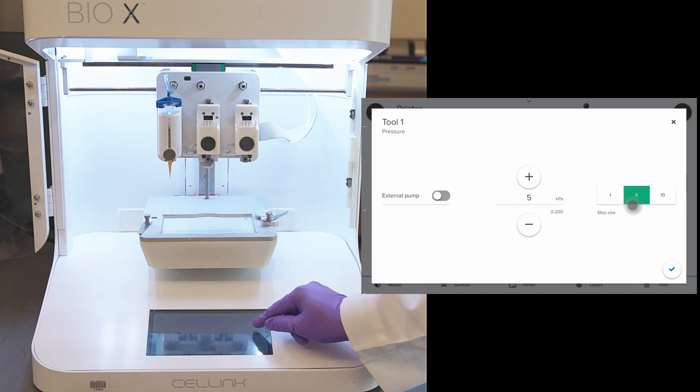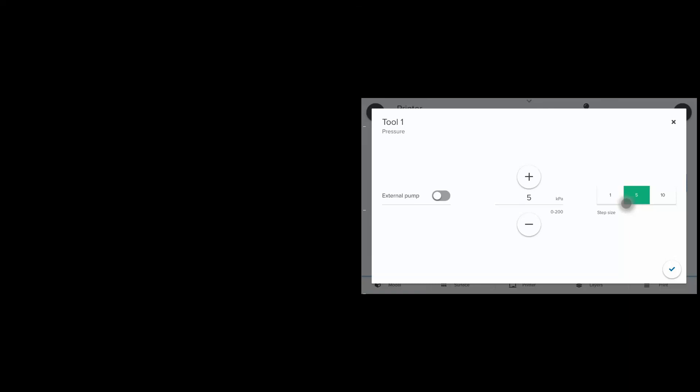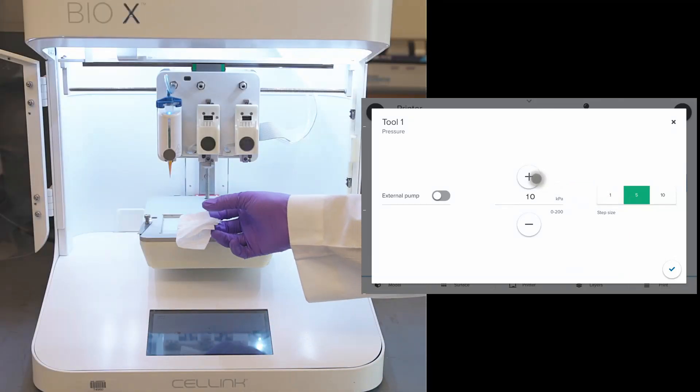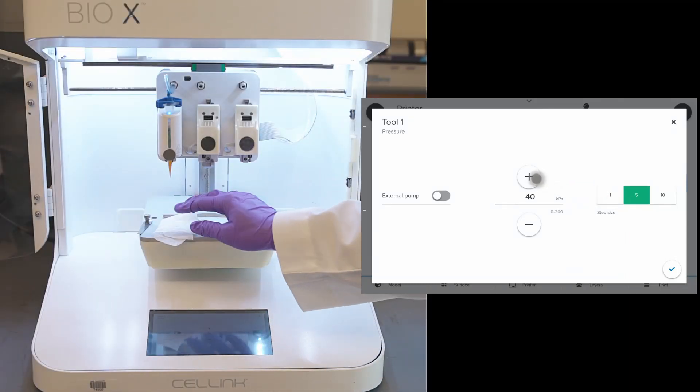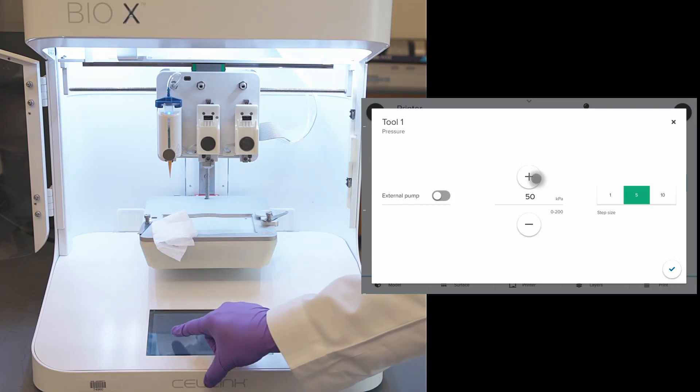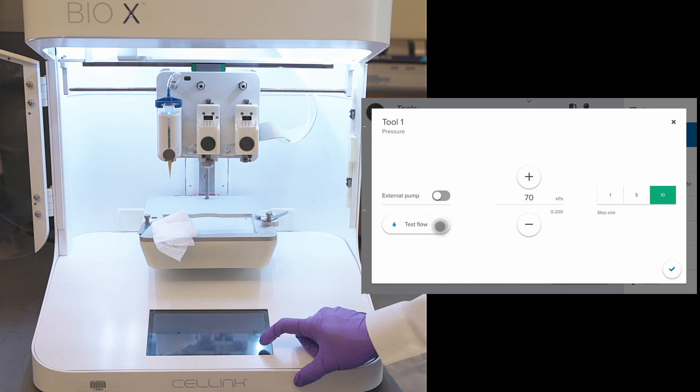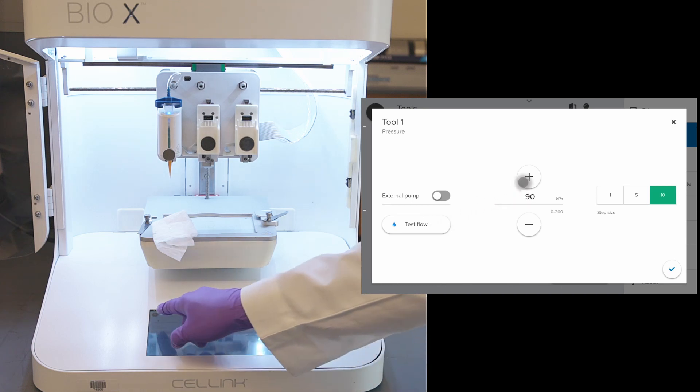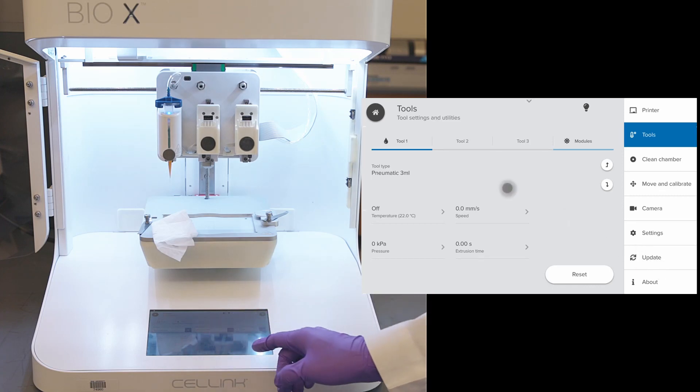Here, we can choose different step sizes. Place a piece of Kimwipe to collect extruded material. Adjust the pressure and click test flow. We may have to try different pressures until we see uniform fiber being extruded. As 50 kPa is not extruding a uniform fiber, I am going to increase the pressure to 100 kPa. Once we see optimal extrusion, click OK.